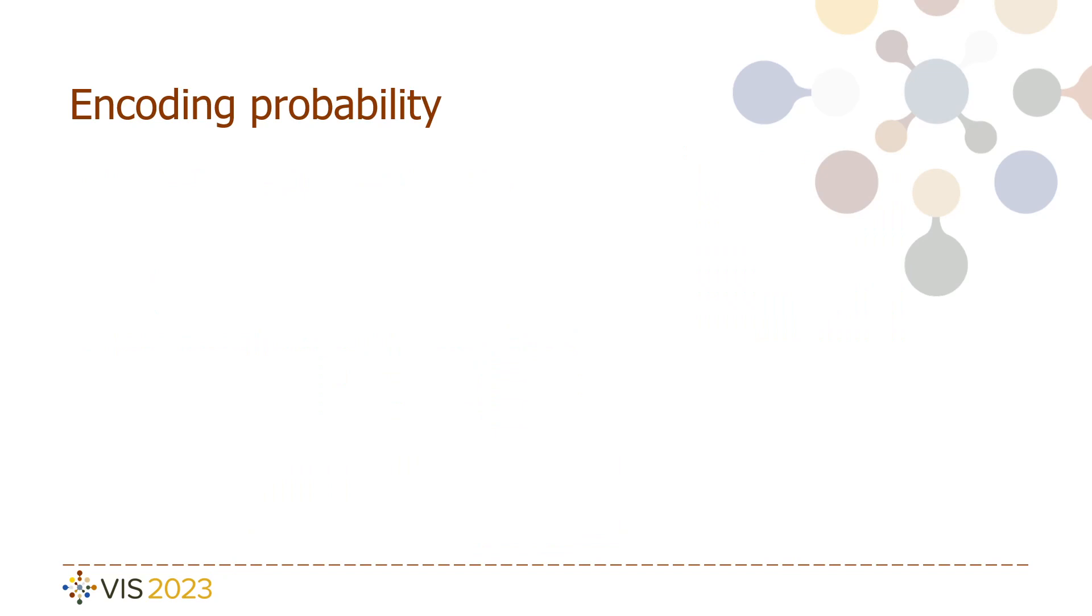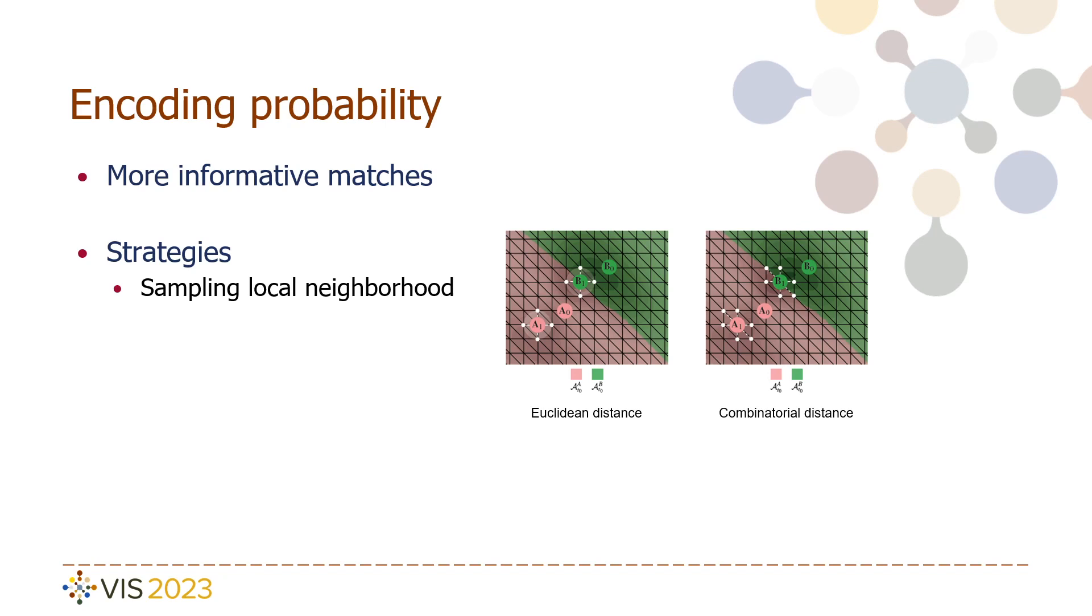As demonstrated, the previous method has cases where it may fail. To mitigate these issues, we enrich each correspondence in a tracking graph with more information. We do this by defining the probability of a match based on two different strategies.